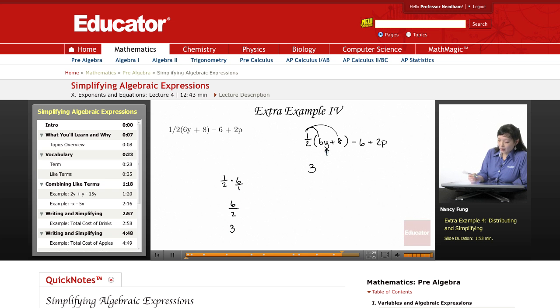And look what's with the 6: a y. So it's going to be 3y. Plus, let's think about this 8 here. 1/2 times 8, which I can put over 1.